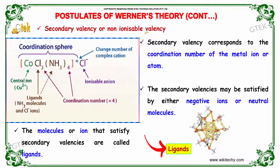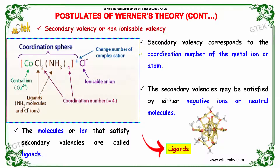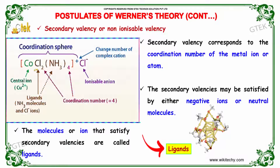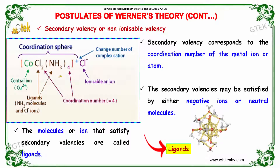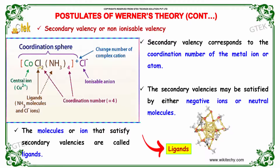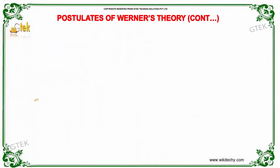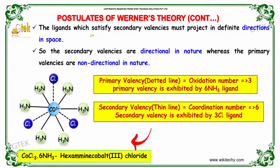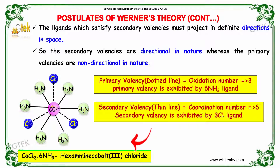Now let's talk about the secondary valency or non-ionizable valency. The secondary valency can correspond to the oxidation number of the metal ion or atom. The secondary valencies may be satisfied by either negative ions or neutral molecules. The molecules or ions that satisfy secondary valencies are called ligands. The ligands which satisfy the secondary valency must project in definite directions in space, so secondary valencies are directional in nature, whereas primary valencies are non-directional.